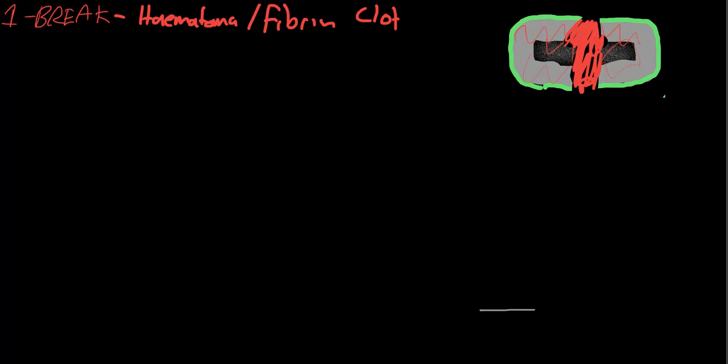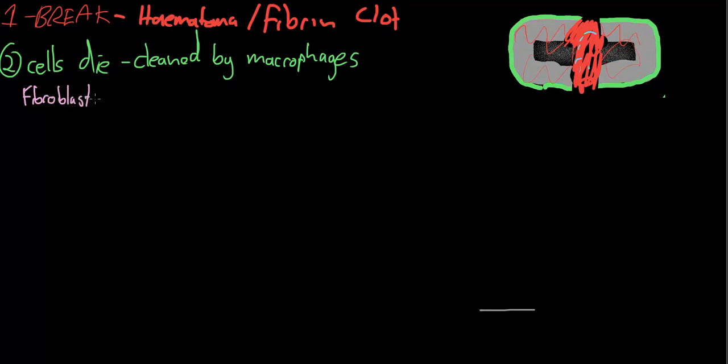So after that, step two is cells within this hematoma die, most of them, cleaned up. So reabsorbed by macrophages. So cells die, not all the cells. Some cells that are hanging around in this hematoma and on the periosteum, the fibroblasts, which can be pink, fibroblasts survive and replicate, and they form granulation tissue.